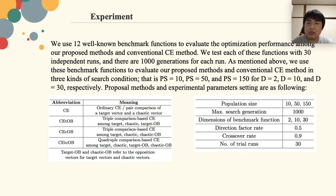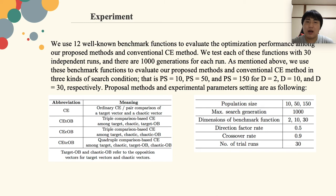That is, population size equals 10, 50, and 150, for dimensional size equals 2, 10, and 30, respectively. The proposed methods and experimental parameter settings are as follows, and we will also use these abbreviation names in the later evaluation part.